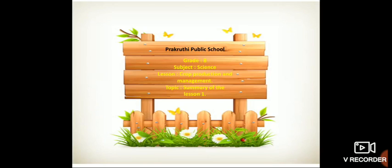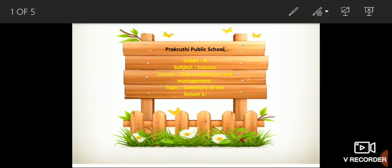What did we see? Can you tell me the topics? The first one is types of crops, and how can we take care of the crops? There were 8 steps we have seen in the agricultural practices. Shall we go to the summary, children?